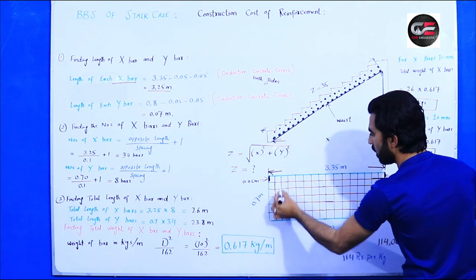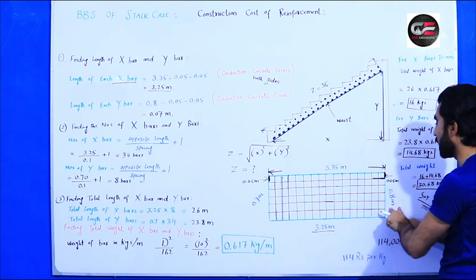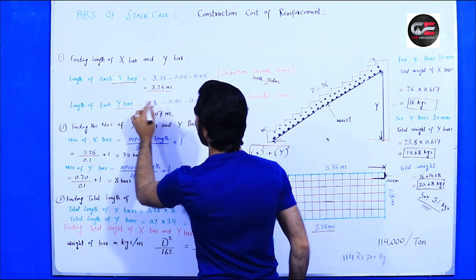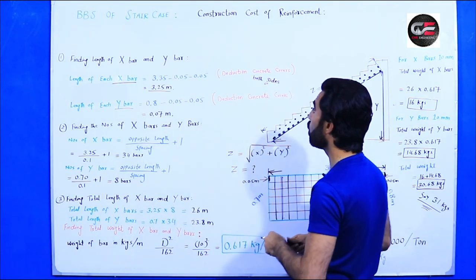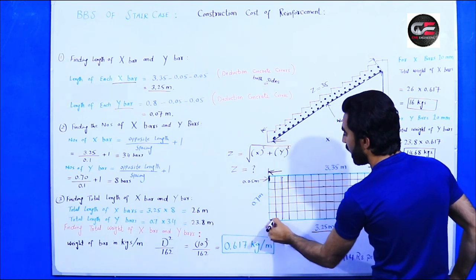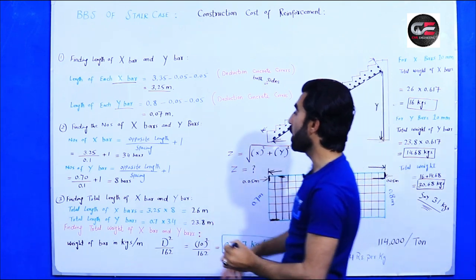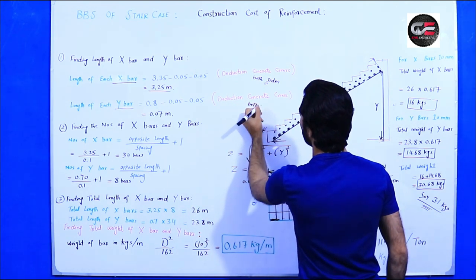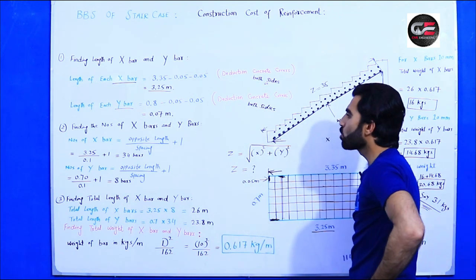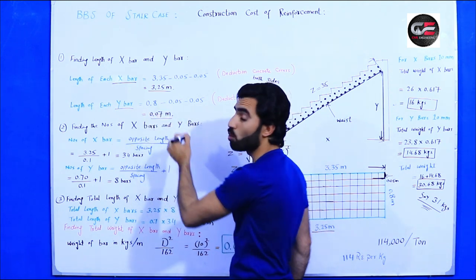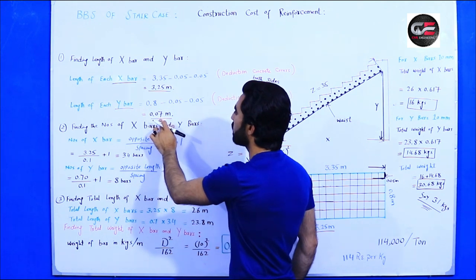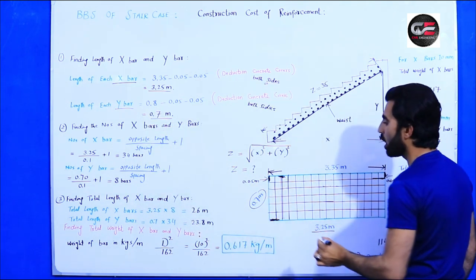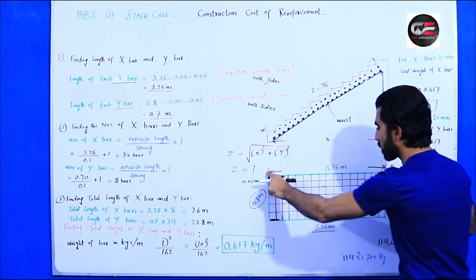Now for the y-bars: the clear width of the staircase is 0.8 meter. We also deduct the concrete cover from both sides — 0.05 meter each side. So: 0.8 − 0.05 − 0.05 = 0.70 meter. That is the length of each y-bar after deducting concrete cover from both sides.